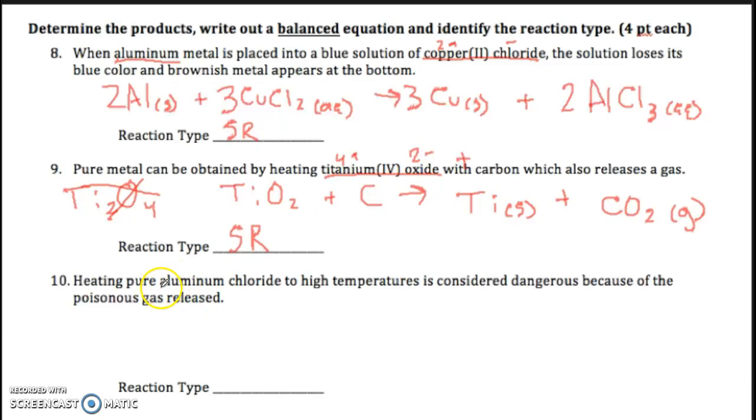And then on this last one, pure aluminum chloride, high temperature, dangerous because of the poisonous gas released. I gave you one thing, AlCl3. I already wrote it up here. It's solid, heated, dangerous gas. Well, the only way this is going to work is if I split this in half and I make aluminum metal. And chlorine as a gas is Cl2. Balance it. 3, 2, 2. Decomposition.